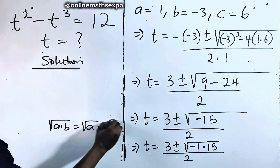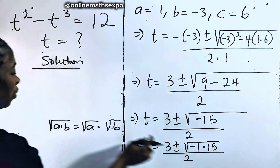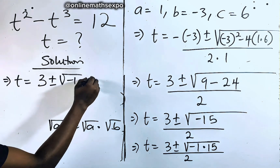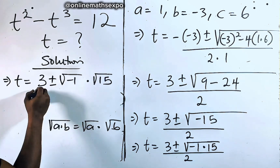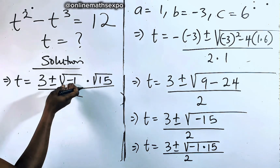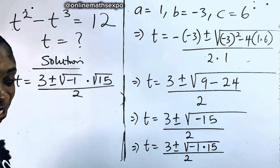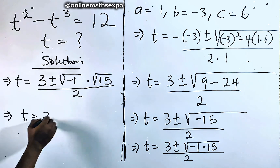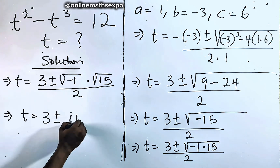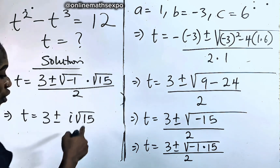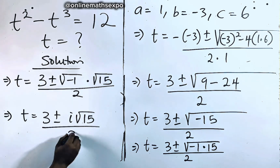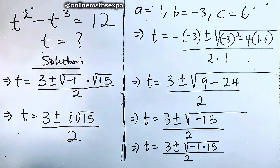We simplify square root of negative 15 as square root of negative 1 times square root of 15. Since square root of negative 1 equals the imaginary unit i, we have t equals 3 plus or minus i times square root of 15, all divided by 2. Since 15 is not a perfect square, it cannot be simplified further.